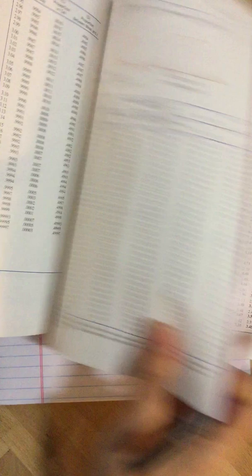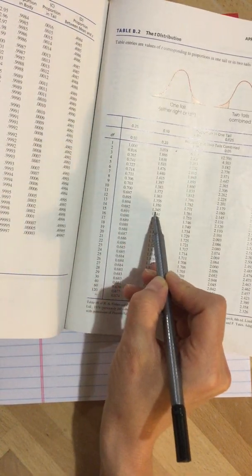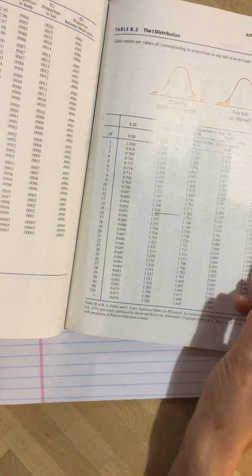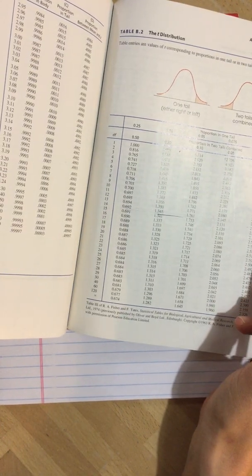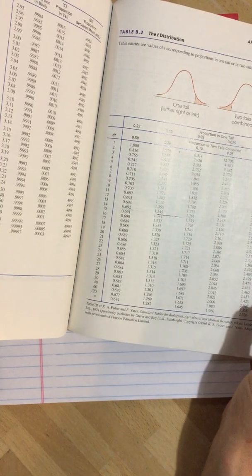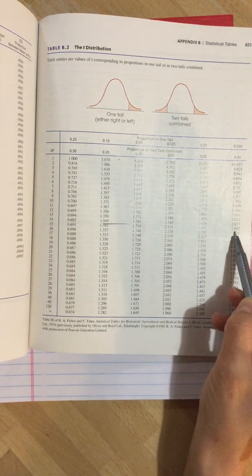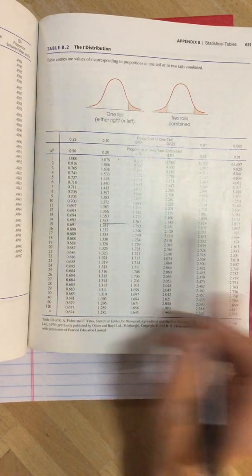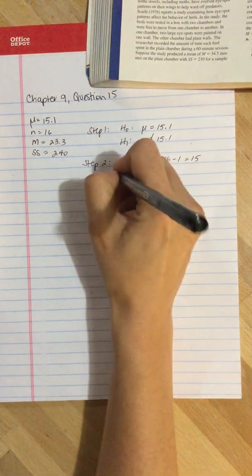Two-tailed test, we go to B2, go to 14 across, proportion and two tails combined at alpha 0.01. Our value is 2.947, so t-critical equals 2.947.